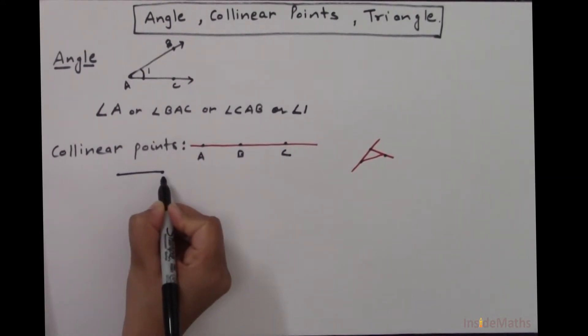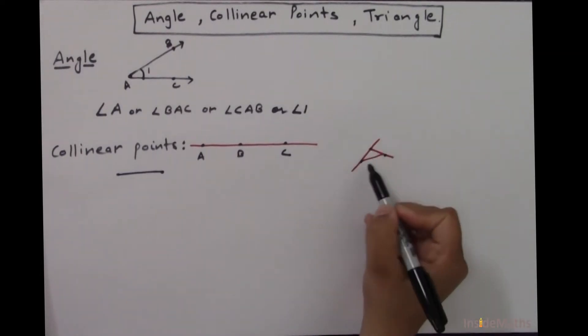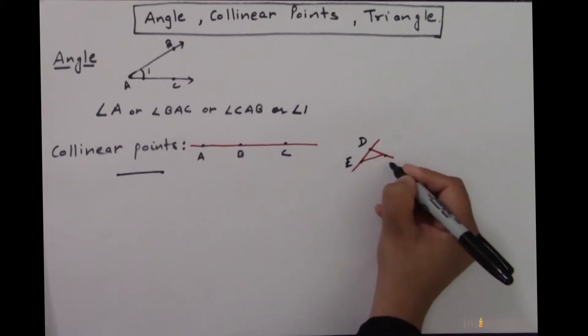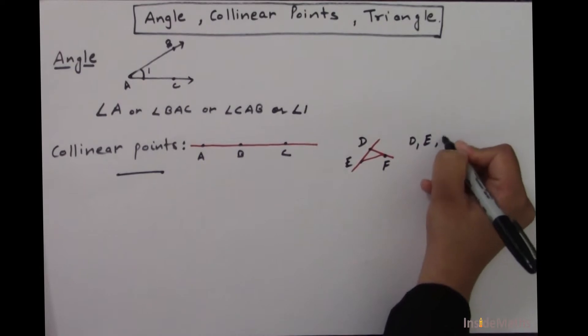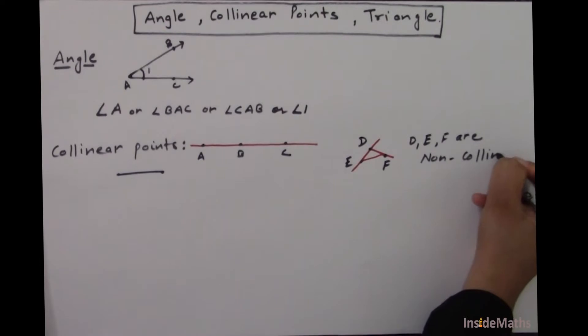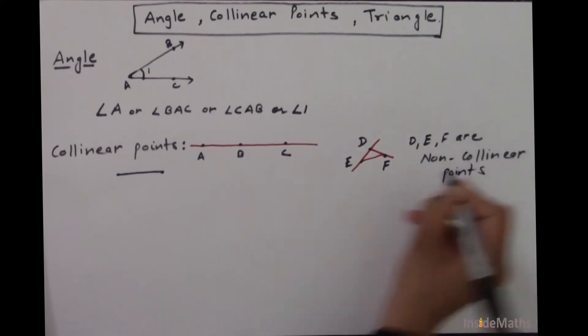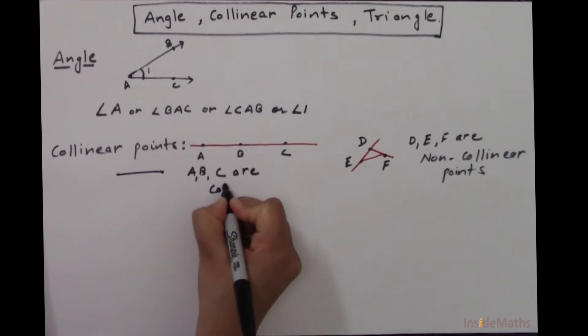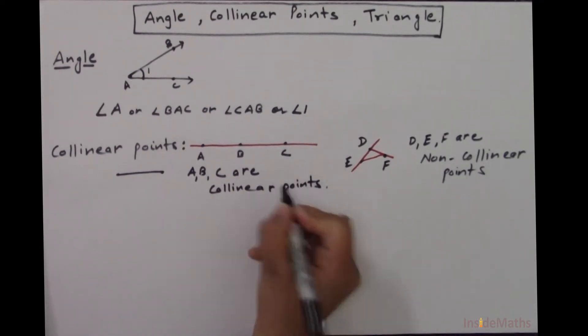And the points which are not collinear are called non-collinear points. Let's say this is D, E, and F. So D, E, F are non-collinear points, and here A, B, C are collinear points.